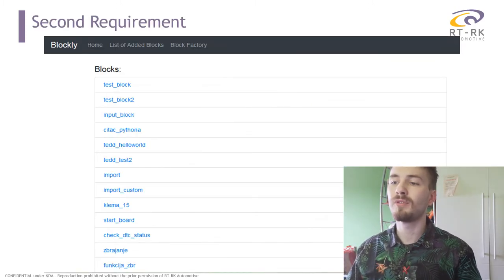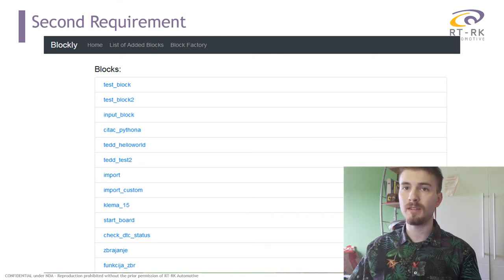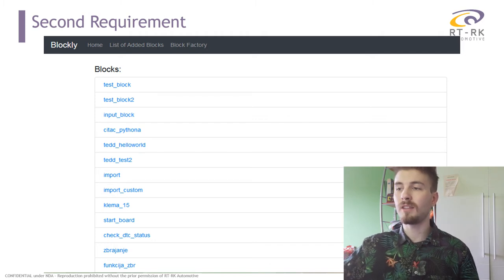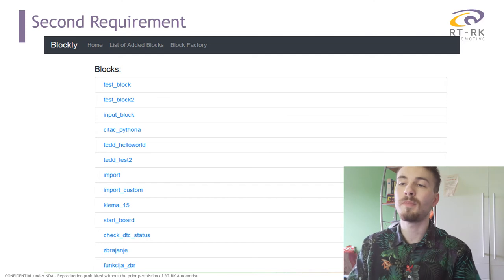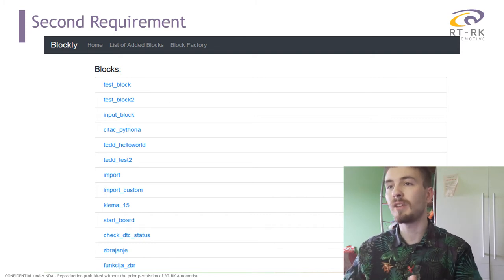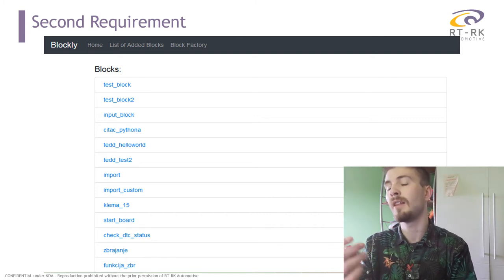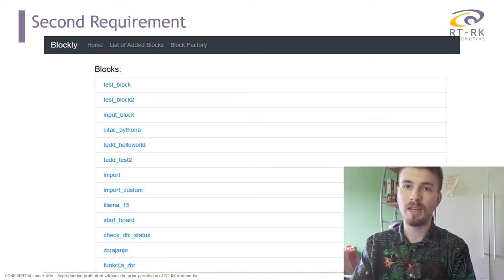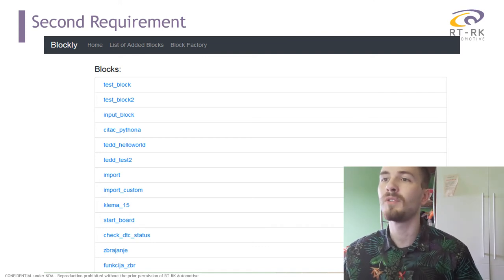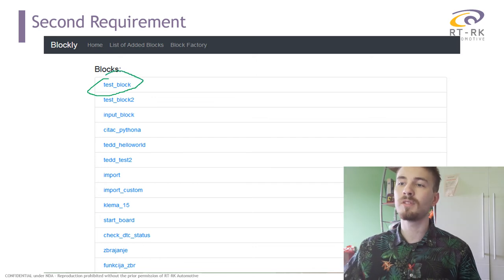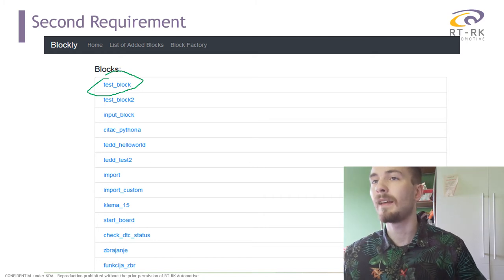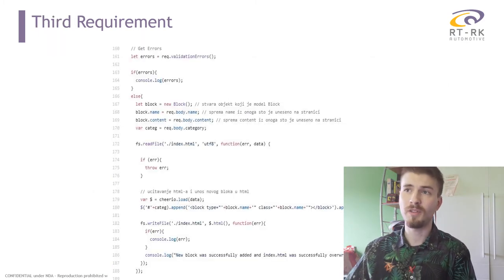The second requirement was to save blocks into the database. This is a representation of the blocks currently saved in the database. I used the Mongoose module with the Node.js server to create a connection with MongoDB so that I can save, load, edit, and delete blocks. If you press one of the blocks, you get redirected to a page where you can either edit or delete them.